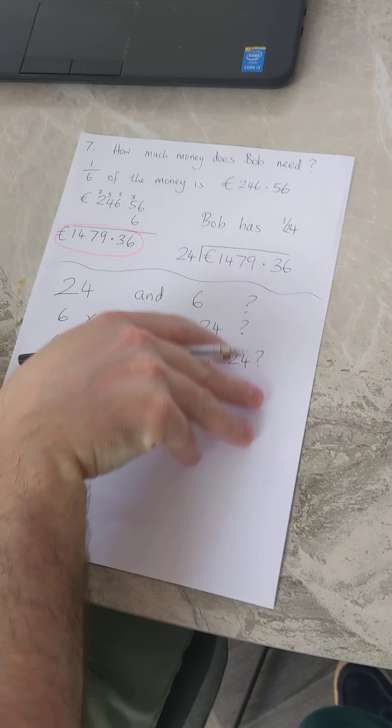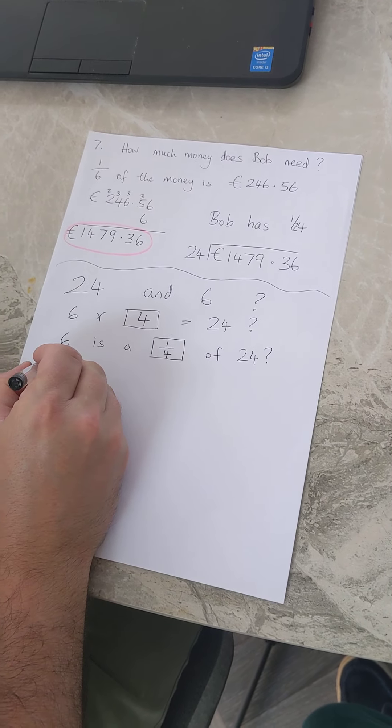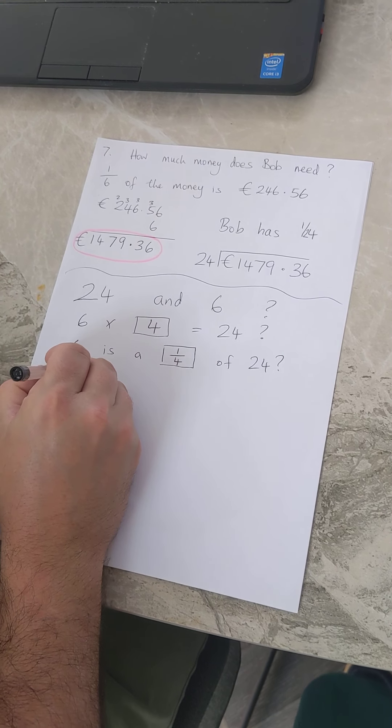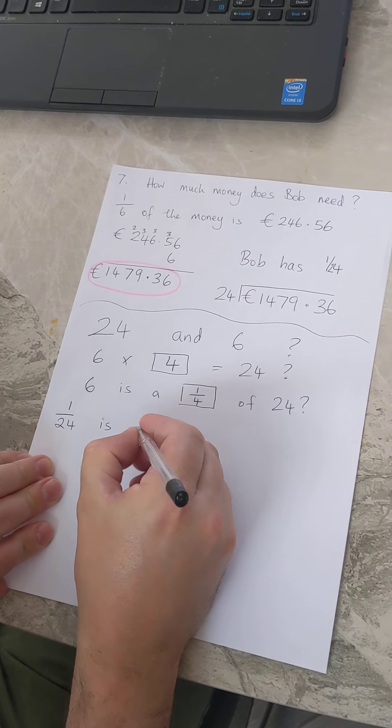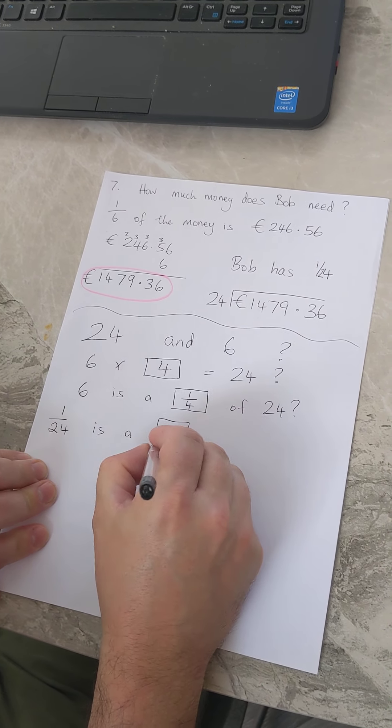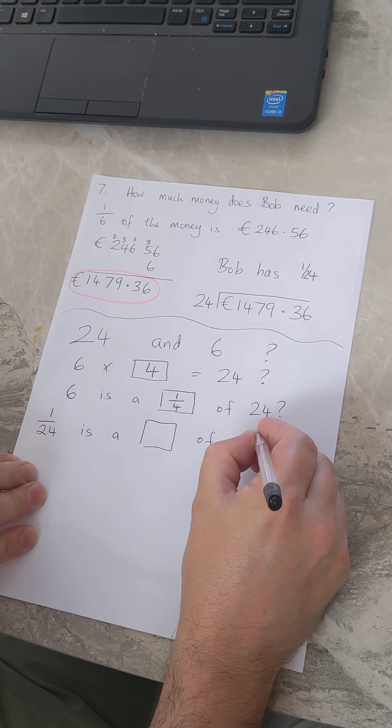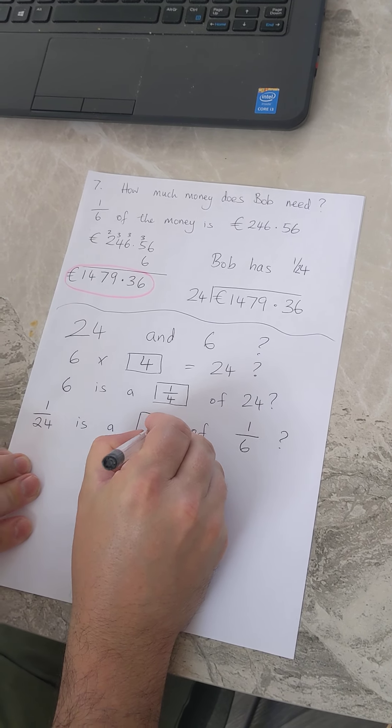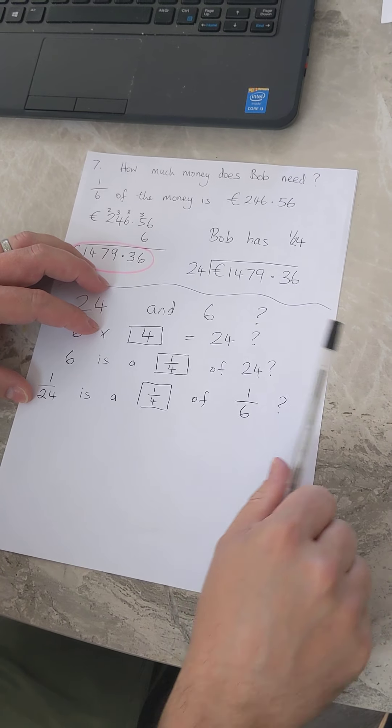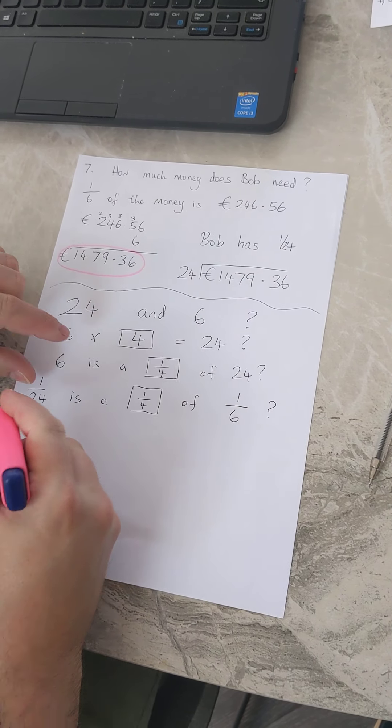And six is a what of 24? Six times four is 24, so six is a quarter of 24. And that actually means then if we flip that, that one twenty-fourth is a what of one-sixth? It's a quarter of one-sixth and I can prove that here.